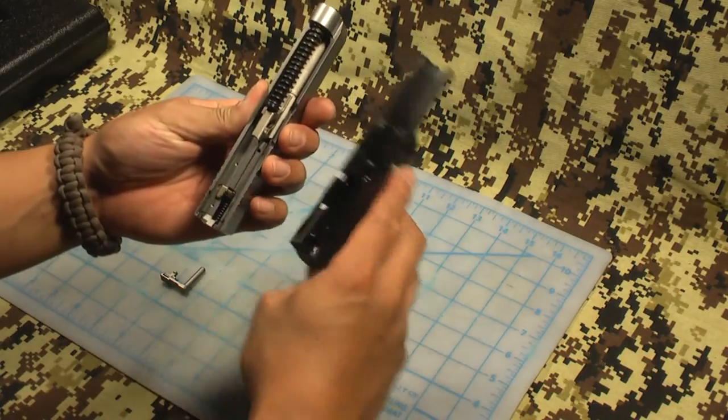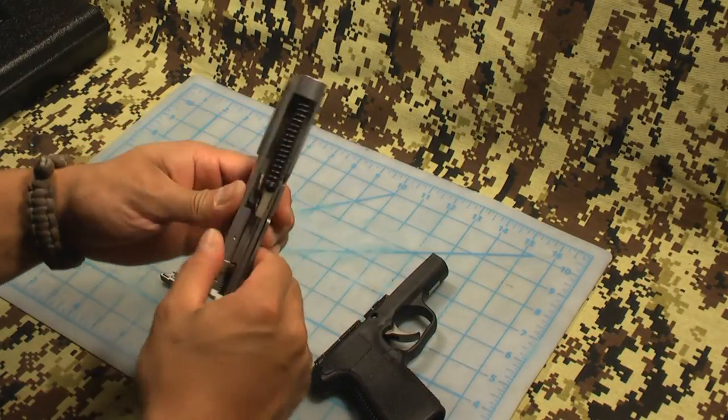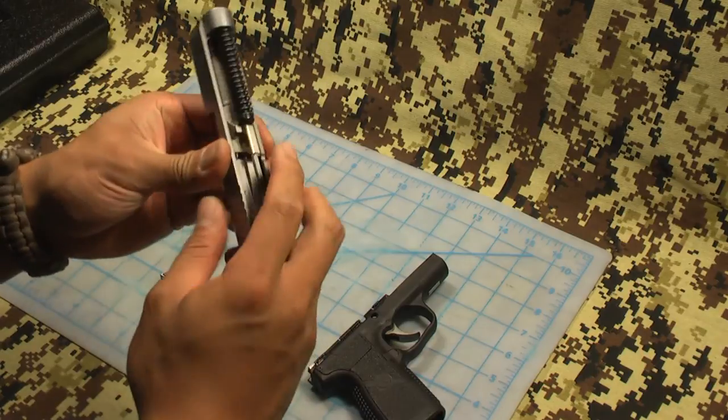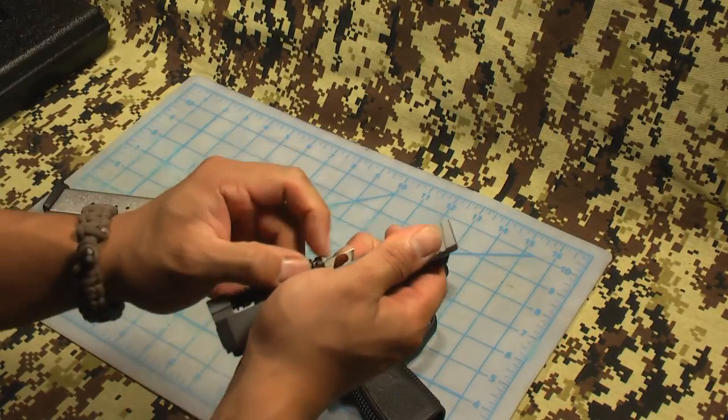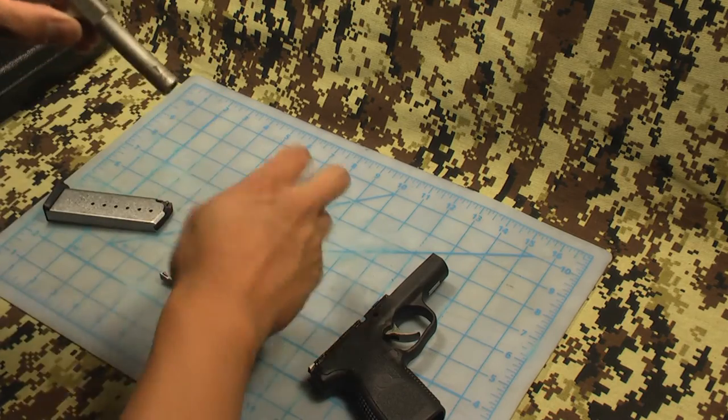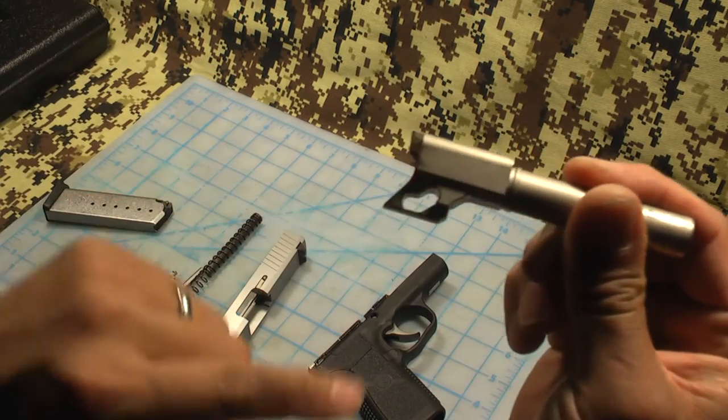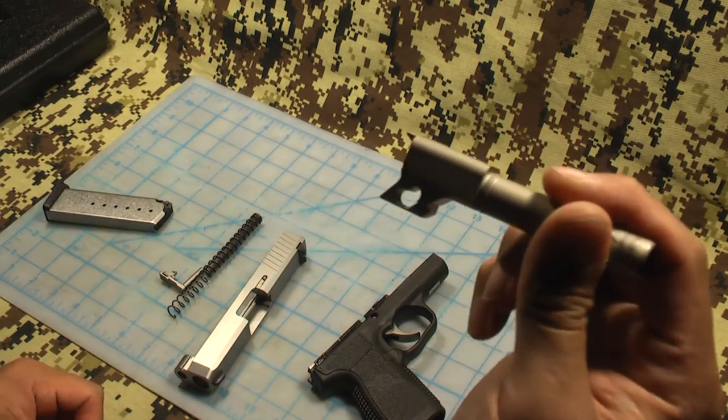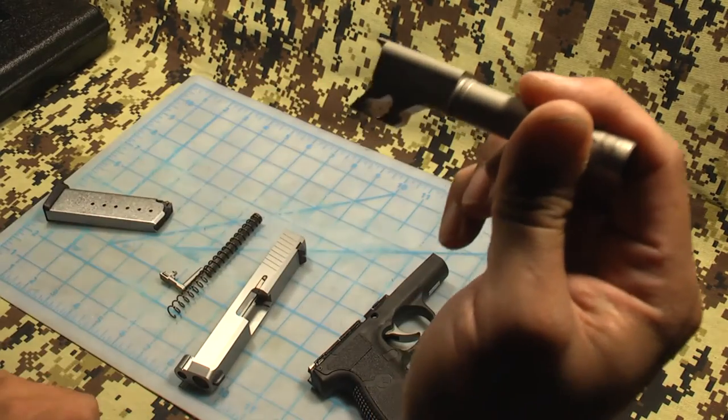That's how you field strip. Take out the spring guide rod. The guide rod is steel, which is good, full length steel. And that's the barrel. I'm going to take that out for you. Interesting design in the barrel, it's kind of like a 1911 lug there.